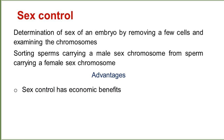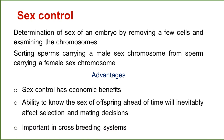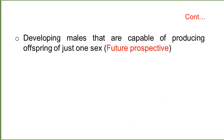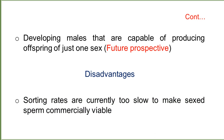The advantages of sex control technology include economic benefits. It enables knowing the sex of offspring ahead of time, which will inevitably affect selection and mating decisions. It is important in crossbreeding systems and enables developing males that are capable of producing offspring of just one sex. The limitation is that sorting rates are currently too slow to make sex-sorted sperm commercially viable.